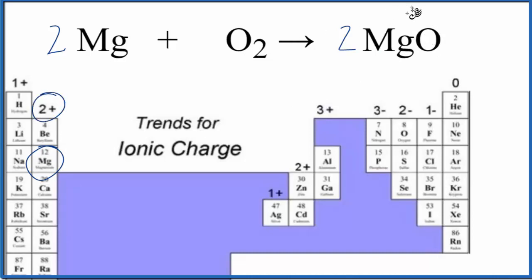That has a two plus ionic charge. Let's put a two plus up here. Then the oxygen over here has a two minus ionic charge. So you can see we have two plus and two minus, they cancel out. We have a net charge of zero, so that's why we end up with MgO in the product.